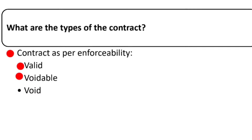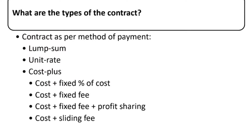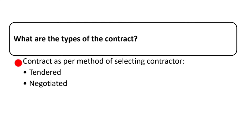As per the method of payment, there are three main types: lump sum contract, unit rate contract, and cost plus contract. The cost plus contract contains four sub-types: cost plus fixed percentage of cost, cost plus fixed fee, cost plus fixed fee plus profit sharing, and cost plus sliding fee.